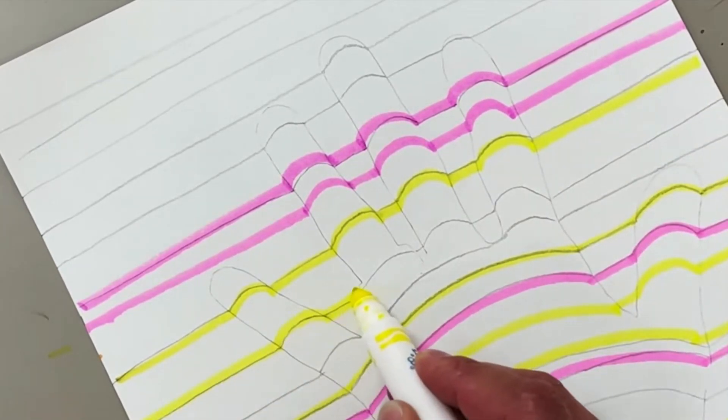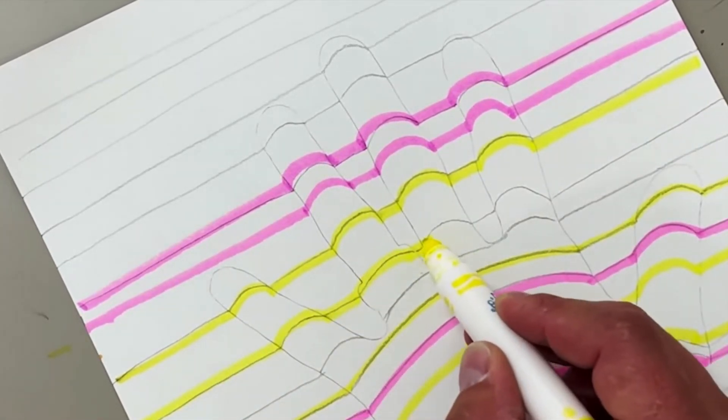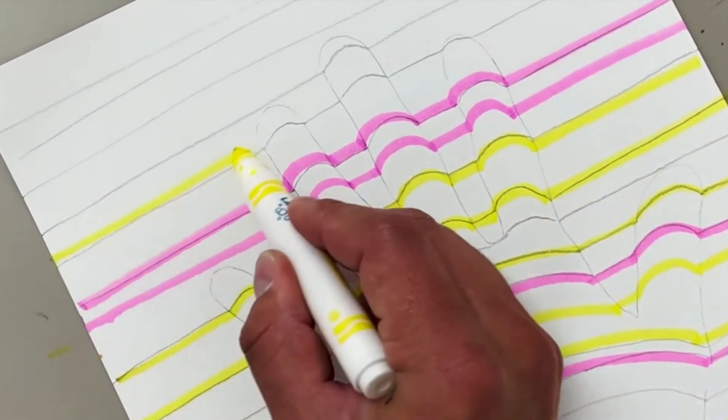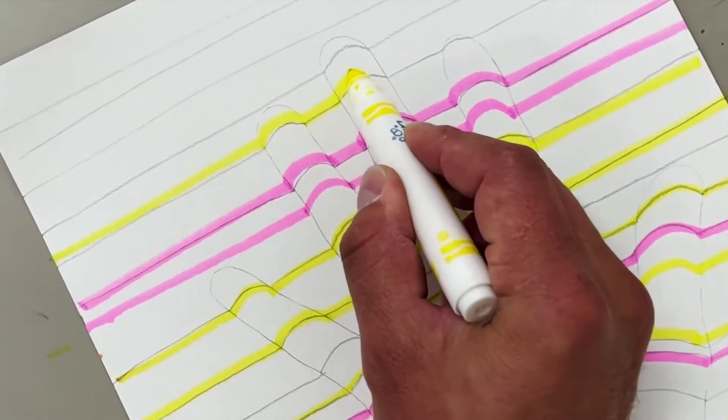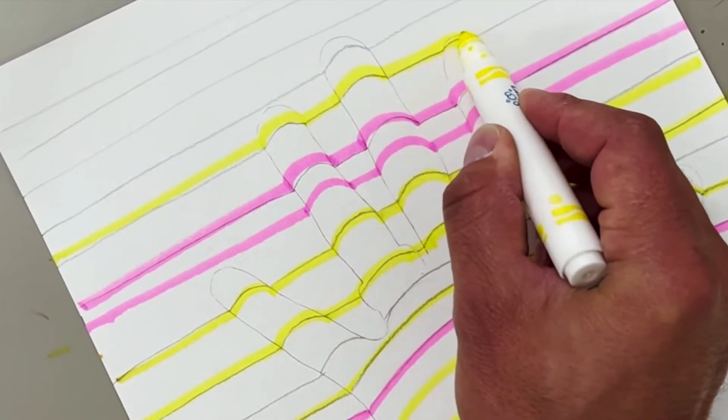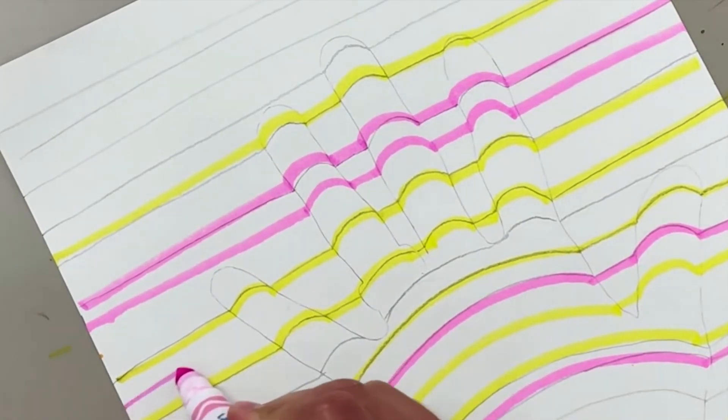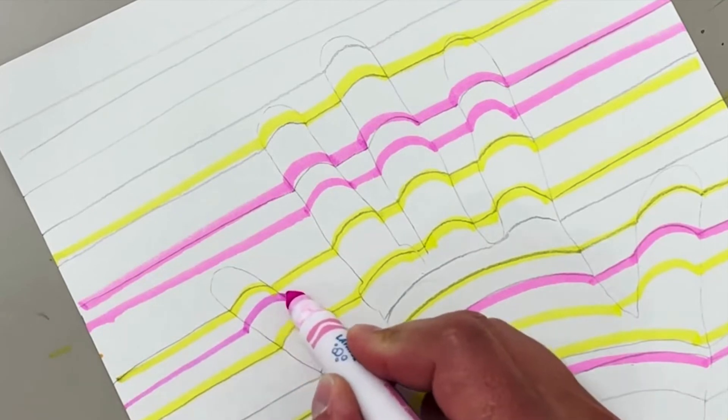Keep going with as many colors as you want until you have completely filled in your paper. As you'll see in a moment, I'm going to use more than just two colors, but I encourage you to use two, three, four, five. Use the whole pack if you'd like. It's going to create a cool effect the more colors you use, so that's cool. And you don't have to use them in any particular order.